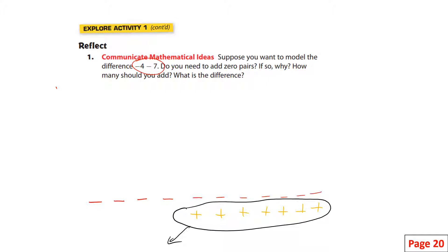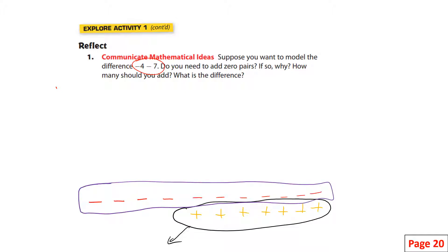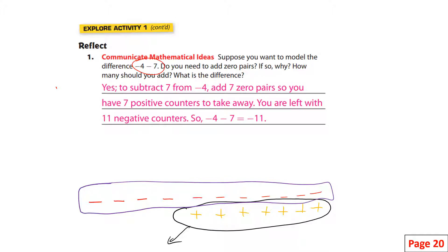The result is 11 negatives. So the publisher says: to subtract, you have to have seven zero pairs so you have seven positive counters to take away. You're left with 11 negative counters. So negative four take away seven positives is negative 11.